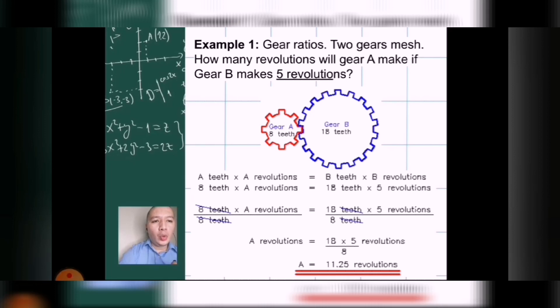Gear ratios. Two gears mesh. And how many revolutions will gear A make if gear B makes 5 revolutions? In the picture given, gear A has 8 teeth while gear B has 18 teeth. So, from our given, we have already established that there's 8 teeth for gear A, there's 18 teeth for gear B, and that gear B can make 5 revolutions. What we are just trying to find out now is that how many revolutions will gear A make.